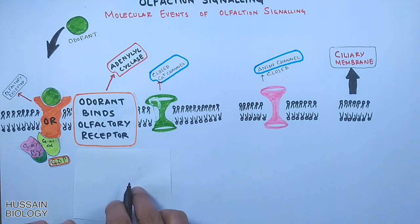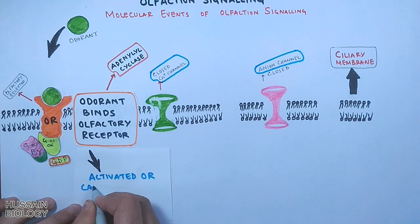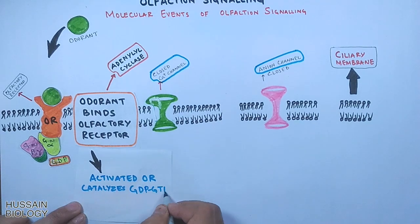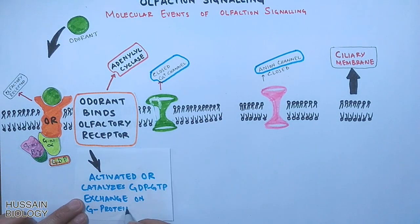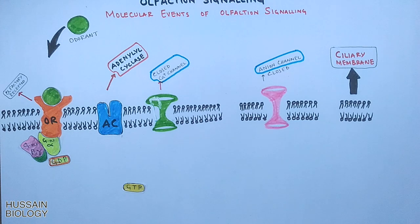The odorant binding, or ligand binding, causes conformational changes in the receptor which in turn initiates the exchange of GDP with GTP. Here we see in this animation the GDP goes off and GTP binds to the G protein.